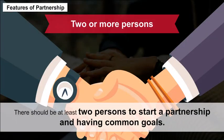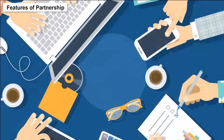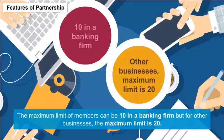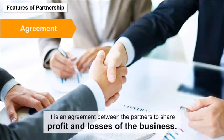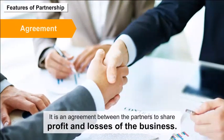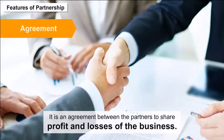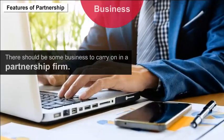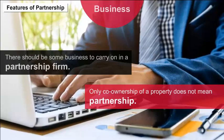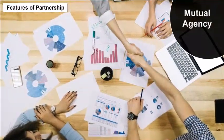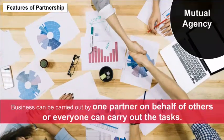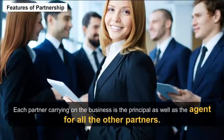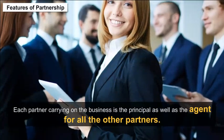Features of Partnership: The essential features of a partnership firm are: Two or more persons — there should be at least two persons to start a partnership with common goals. The maximum limit of members is 10 in a banking firm, but for other businesses the maximum limit is 20. Agreement — there is an agreement between the partners to share profits and losses, which can be written or oral. Business — there should be some business to carry on; co-ownership of property alone does not mean partnership. Mutual agency — business can be carried out by one partner on behalf of others.